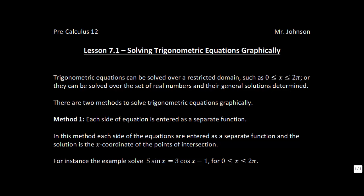Trigonometric equations can be solved over a restricted domain. So we've done this a little bit before where we can look at domains like between zero and two pi. Or what we can do is we can solve over the set of real numbers and determine the general solutions. So what we're going to see is that trig functions because they are periodic and they just keep rolling like this, sometimes there's so many solutions that we just have to express it generally.